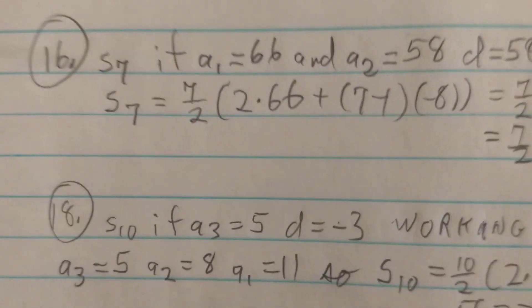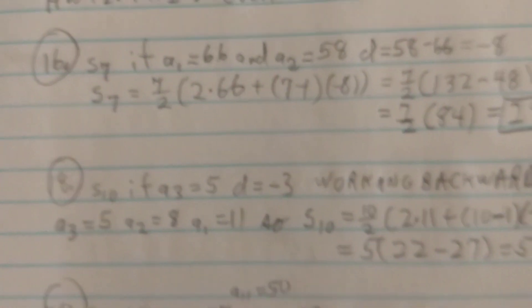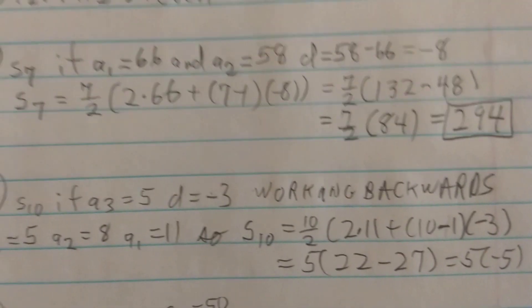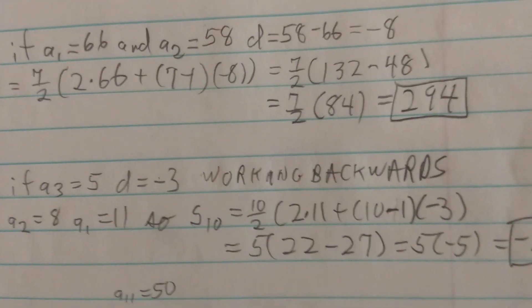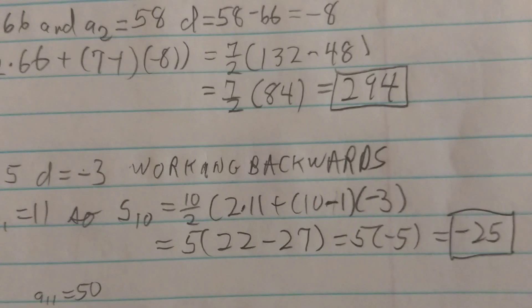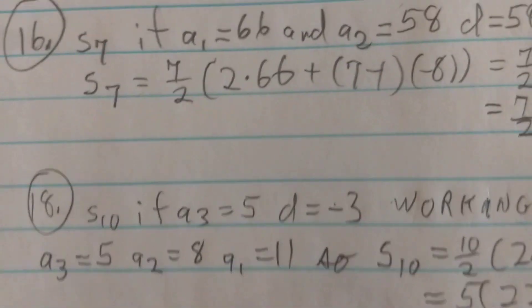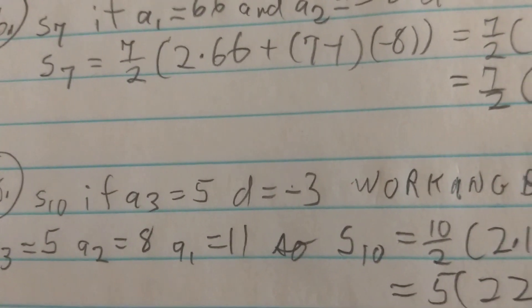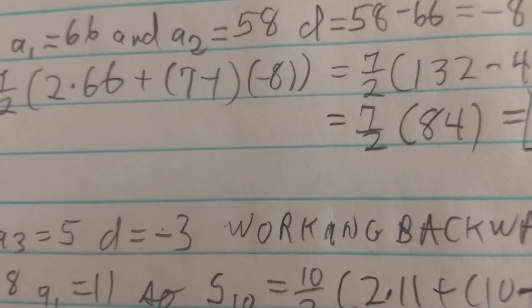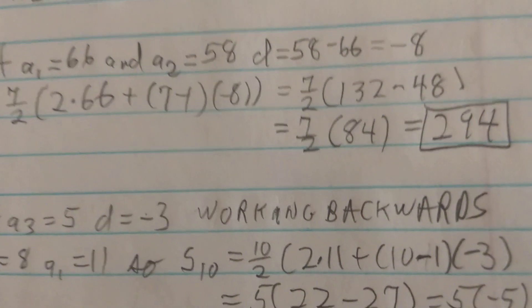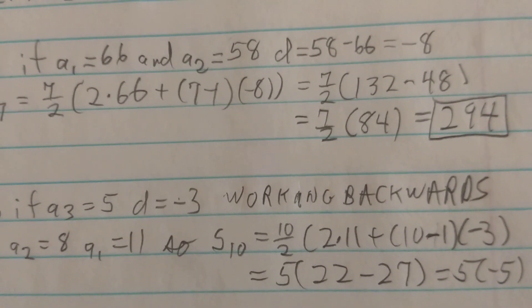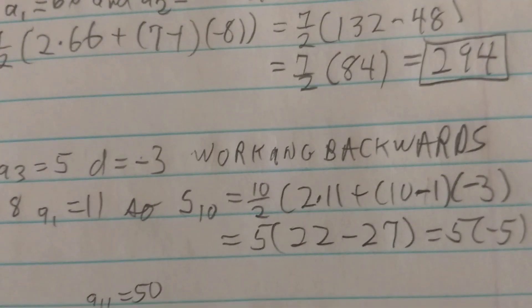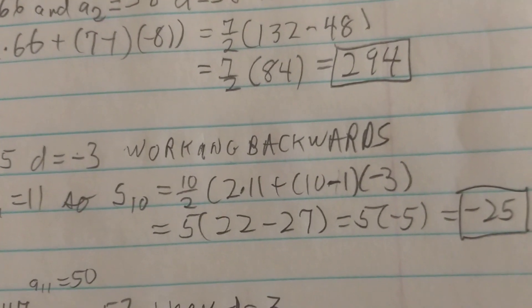For problem 16, find S sub 7 if a1 is 66 and a2 is 58. The common difference is 58 minus 66, or negative 8. Using our series equation, S sub 7 is 7 over 2 times 2 times 66 plus 7 minus 1 times negative 8, or 7 halves times 132 minus 48. Since 132 minus 48 is 84, then 7 halves times 84 on the calculator is 294.